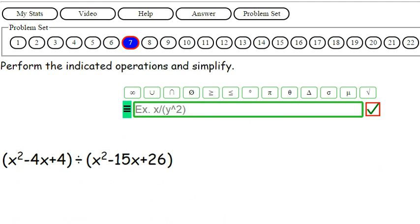Okay, so let's get this written down here. x squared minus 4x plus 4 divided by x squared minus 15x plus 26.